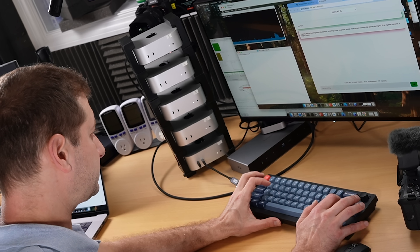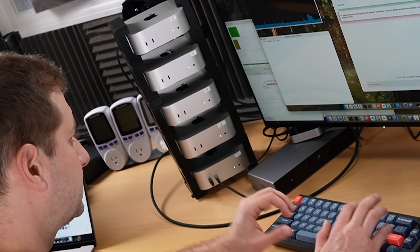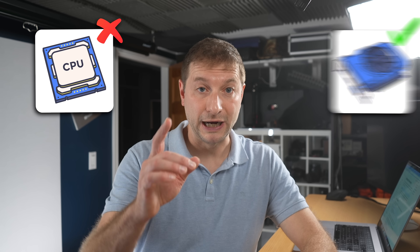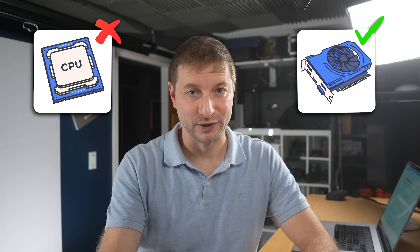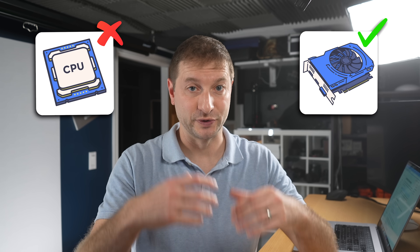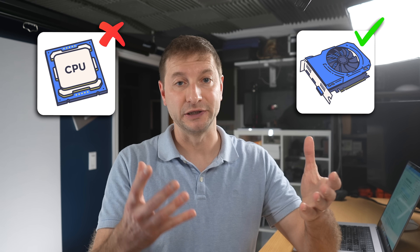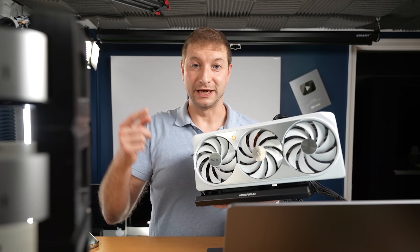Running machine learning models is a parallel task that certain types of processes are really good at. CPUs are not great at running things in parallel, so running models on CPUs is very slow. But GPUs are great at parallel processing, so that's why they're commonly used for this.